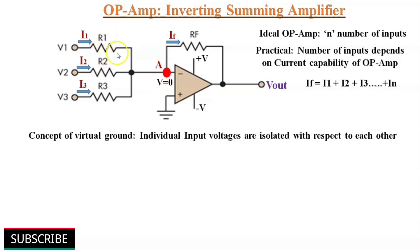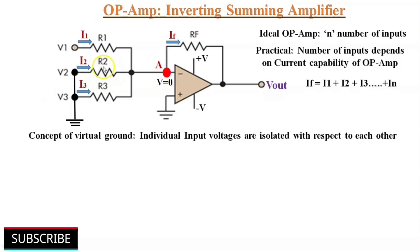If you consider the individual voltage sources one at a time, the remaining voltage sources act as a short circuit. For example, if V1 is considered as the individual source, V2 and V3 are short-circuited and at ground potential, so effectively R2 and R3 do not exist in the circuit. The effective impedance seen by voltage source V1 is just the series resistance R1. So there is no interference between different voltage sources — that is the biggest advantage of the inverting summing amplifier.